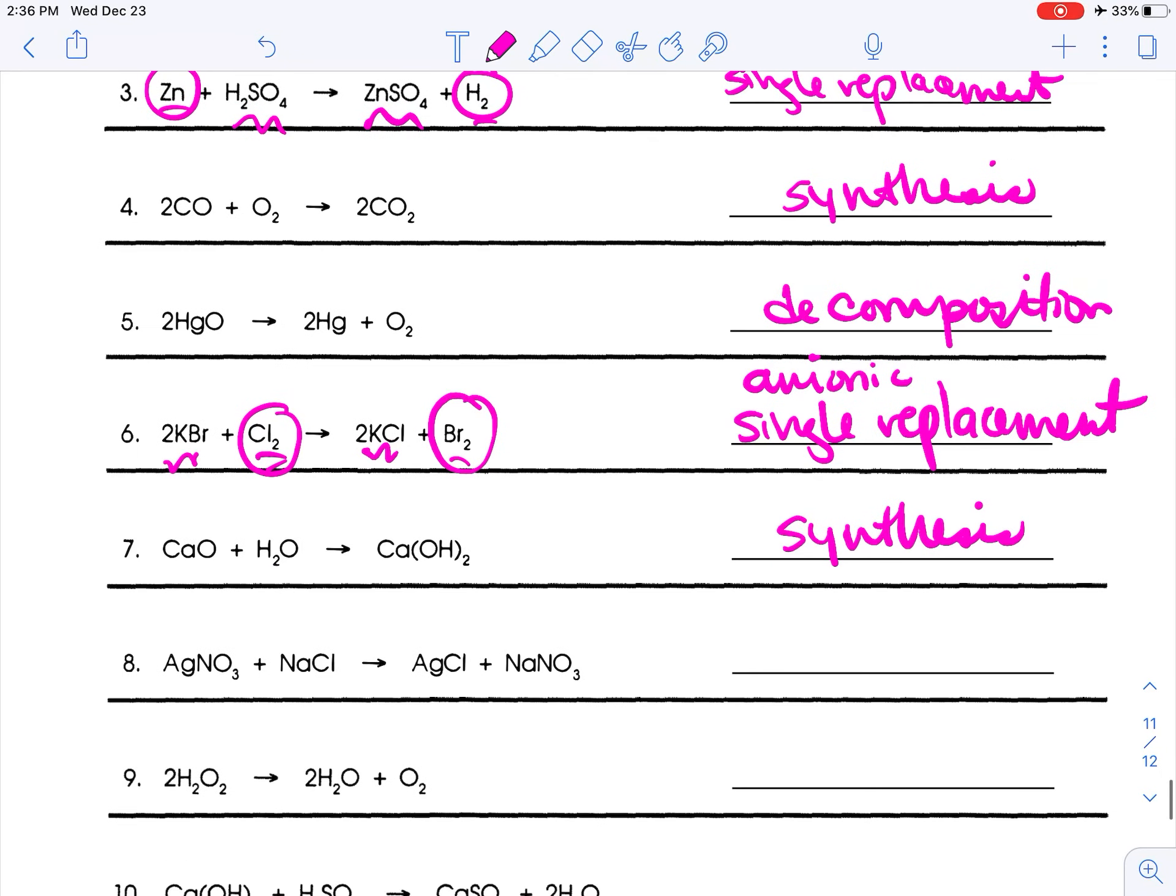Number eight looks like we have two replacements. So this is the do-si-do, we've got silver with the nitrate, and now silver is with the chlorine, and we've got nitrate with the silver, and now nitrate's with the sodium. So this is a double replacement.